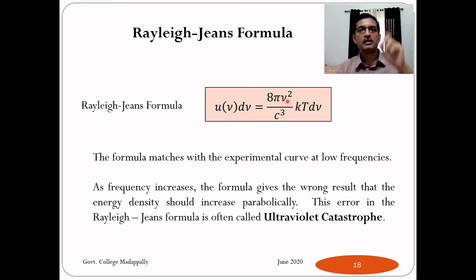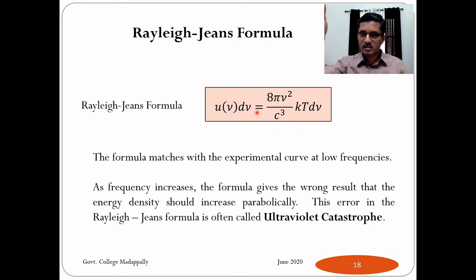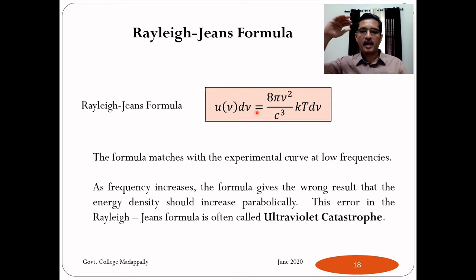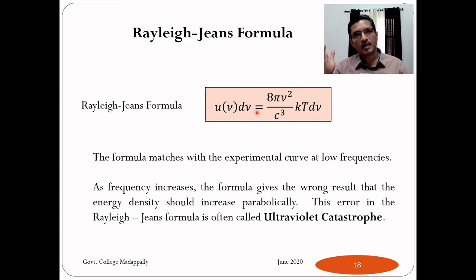Since energy density is proportional to ν², plotting it gives a parabola (y ∝ x²), so the theoretical curve increases parabolically as frequency grows. But the actual experimental result is that energy density increases, reaches a maximum, and then decreases. So even though there is a good match on the low frequency side, at high frequencies there is a complete mismatch.